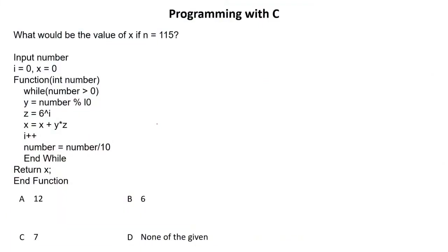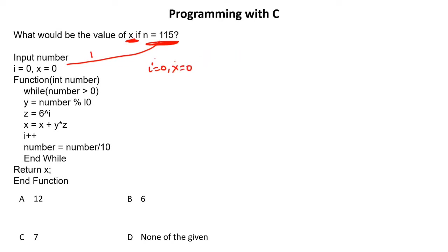This is a pseudocode type question: what will be the value of x, where n is 115? You are asked to input a number — the input is 115. So number is 115, i is 0, and x is 0. In the function, we are passing the value: int number, which is 115.